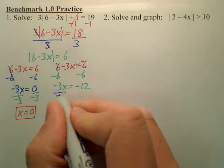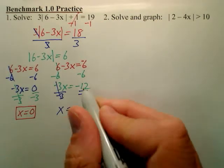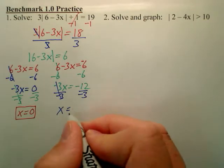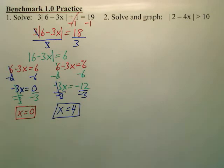And here, we divide by negative 3, and you get x equals, and negative divided by negative is a positive, so that is 4. Those are my two answers.